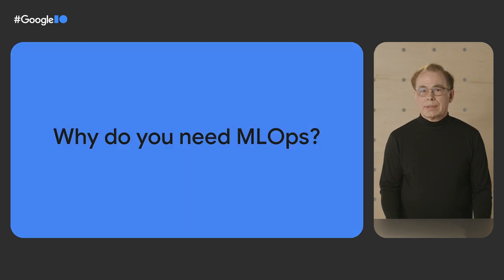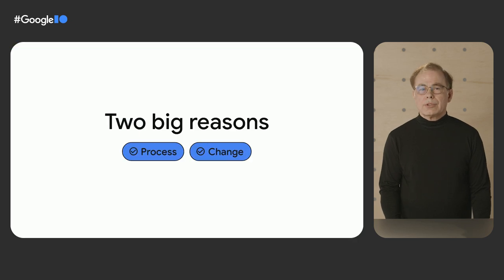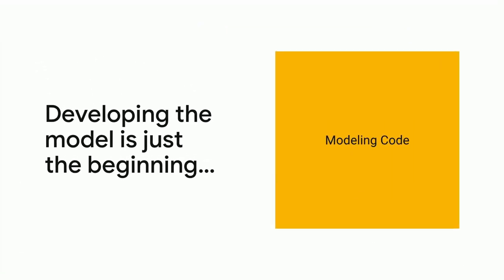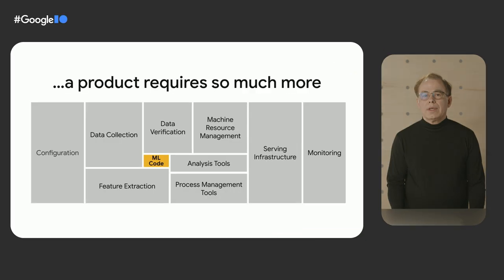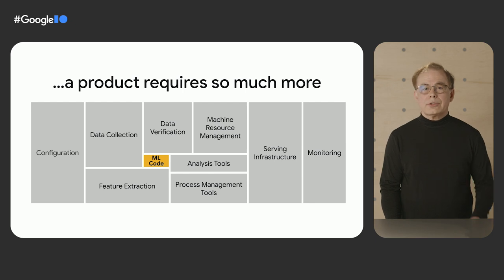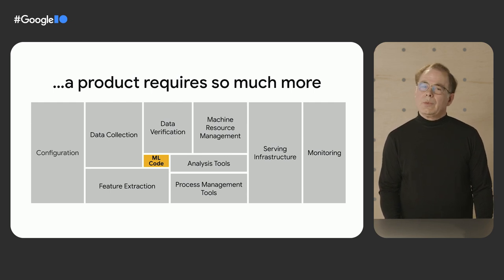Let's start with the basics. Why do you need MLOps? There are two big reasons, and in a nutshell, we can call them process and change. When you're developing a product, you need a production-level process and infrastructure. The world is even more complicated with production ML, where you're not just working with code — you're usually working with ever-changing data. At Google, we've measured the ML model code to be something like 5% of the total code necessary to train and deploy a model in production. All of the other tools and infrastructure are critical to the success of your product or service.